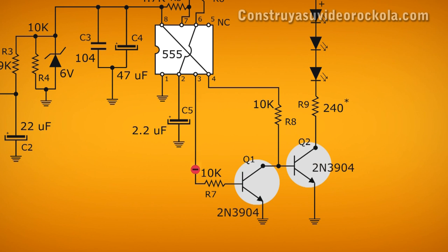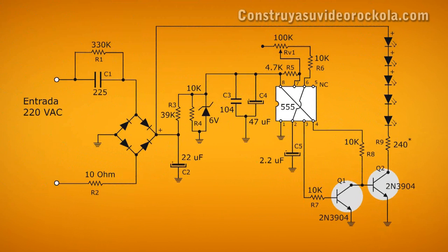When the 555 sends a negative pulse, the first transistor Q1 does not conduct and positively polarizes the base of transistor Q2, making it conduct. At this moment the LEDs turn on. This cycle is repeated at high speed producing the effect of flashing light.